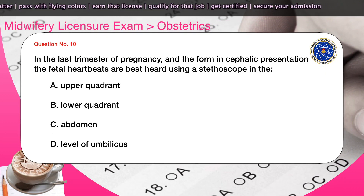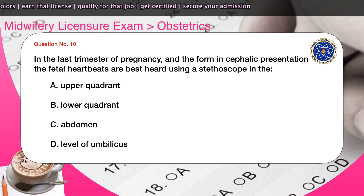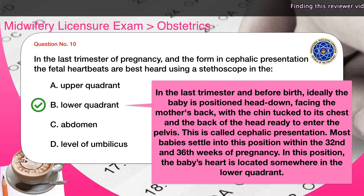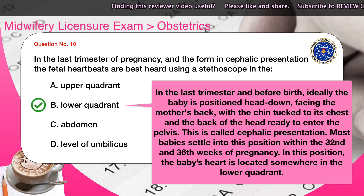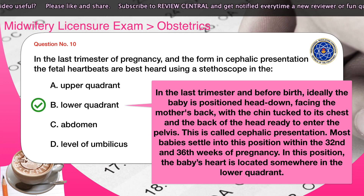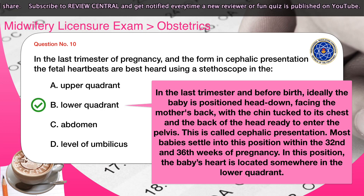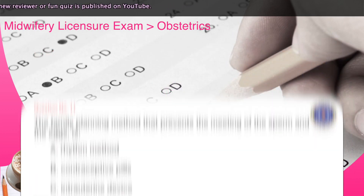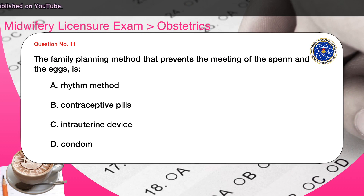Question number ten: In the last trimester of pregnancy in a cephalic presentation, fetal heartbeats are best heard using a stethoscope in the — A) upper quadrant, B) lower quadrant, C) abdomen, D) level of umbilicus. The correct answer is B. In the last trimester, ideally the baby is positioned head down facing the mother's back with the chin tucked to its chest — called cephalic presentation — which most babies settle into between the 32nd and 36th weeks. In this position, the baby's heart is located in the lower quadrant.